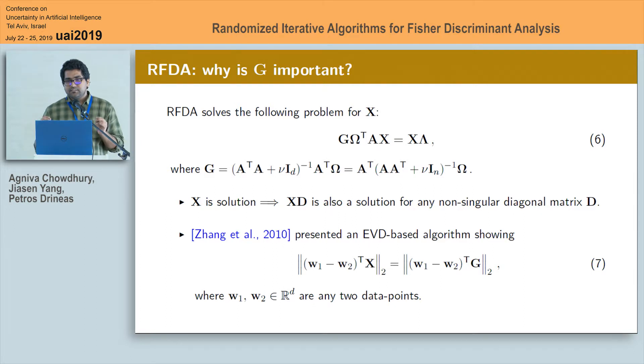if we project them onto this new matrix G then also the distance between any two projected data points are preserved. This implies for any distance based classification methods such as k-nearest neighbors, both these matrices X and G would result in same predictions.